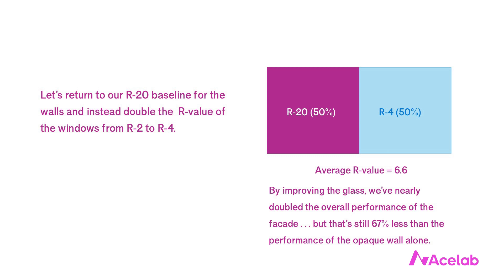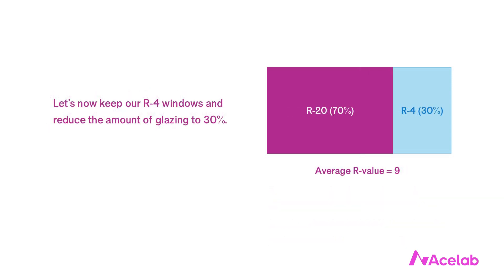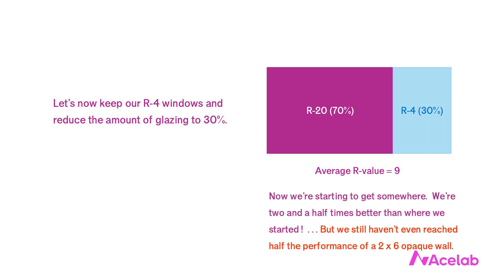R4, by the way, is very good residential glass. The best glazing systems top out around R9 or so. Let's now keep our R4 windows and reduce the amount of glazing to 30% — so instead of a 50-50 split, we've got a 70-30 split between our opaque wall and glazing. This gets us to R9 overall. We're two and a half times better than where we started, but we still haven't even reached half the performance of a 2x6 cavity-insulated opaque wall.